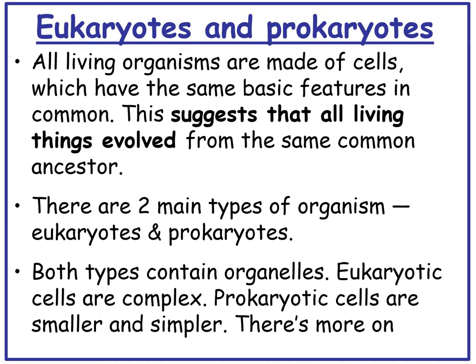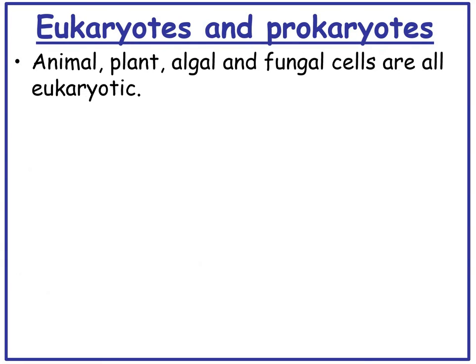Just a recap from GCSE of what eukaryotes and prokaryotes are. All living organisms are made of cells which have the same basic features in common, suggesting all living things have evolved from the same common ancestor. There are two main types of organism: eukaryotes and prokaryotes, and both types contain organelles. Eukaryotic cells are complex, whereas prokaryotic cells are smaller and simpler. Animal, plant, algal, and fungal cells are all eukaryotic cells.